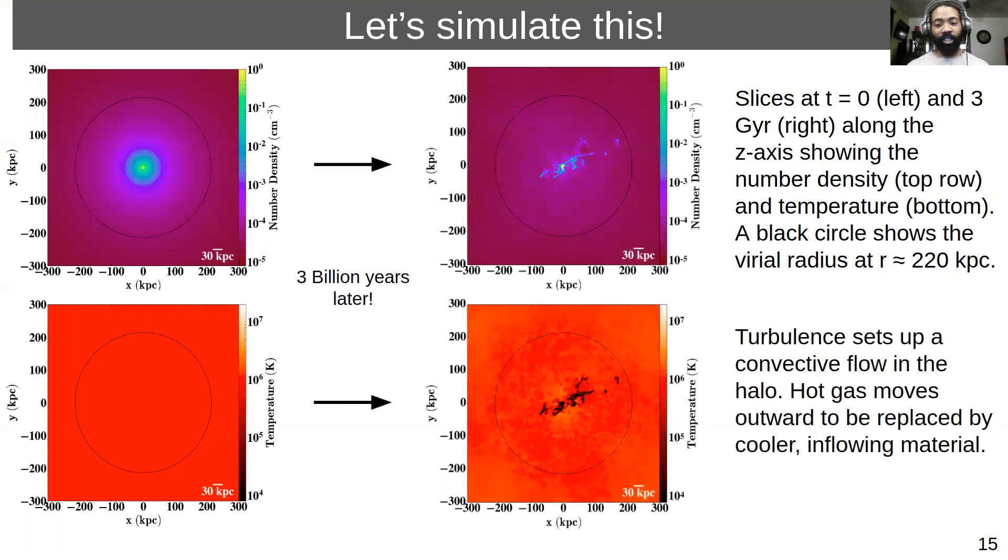We have that turbulence that's injected artificially. This turbulence is on the scale of about 30 kiloparsecs we imagine to be a similar scale as the galactic disk.